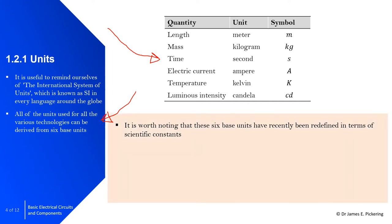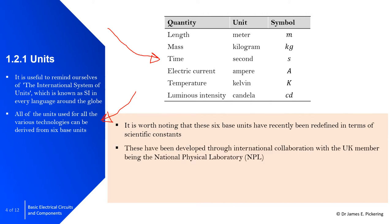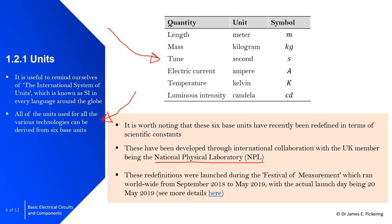These units have recently been redefined through international collaboration, with the UK member being the National Physical Laboratory (NPL). Employees there work in international collaboration to redefine the scientific constants. The redefinitions were launched during the Festival of Measurement, which ran between September 2018 and May 2019.